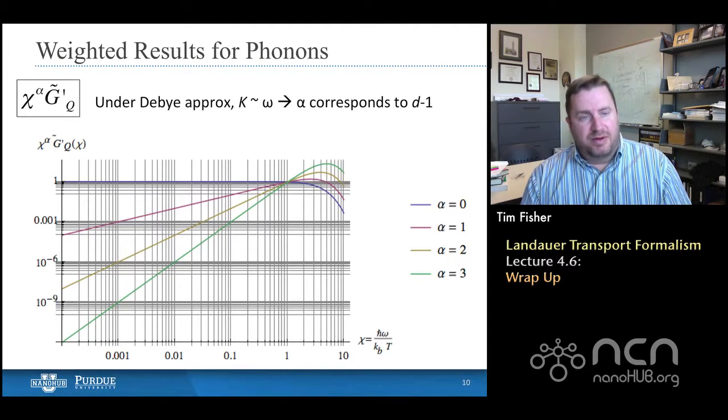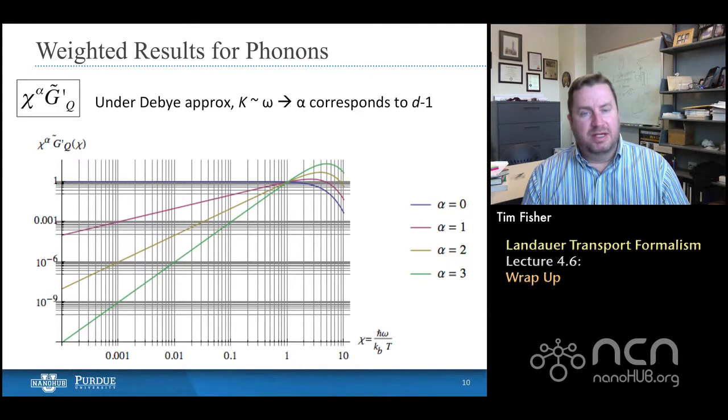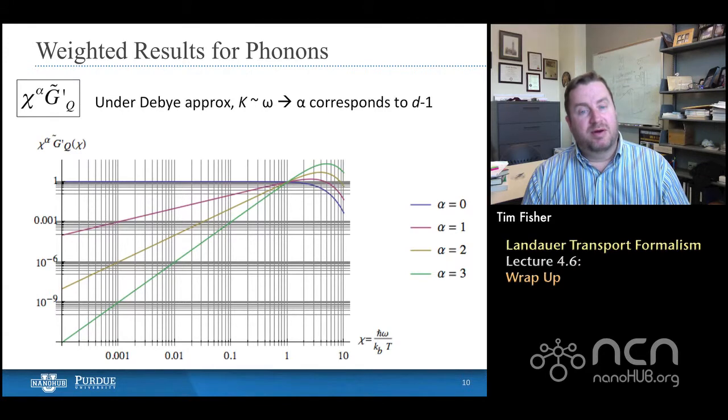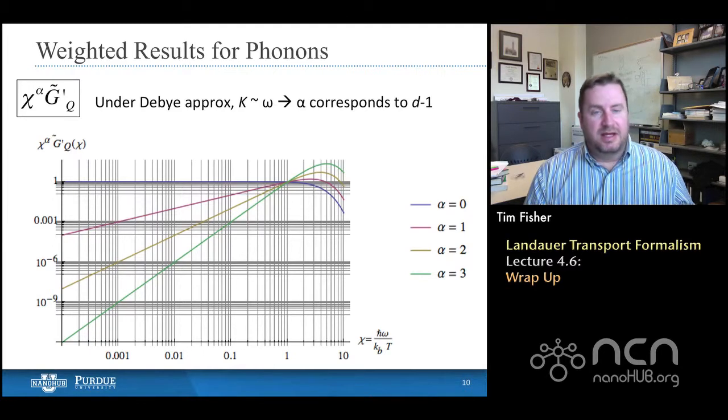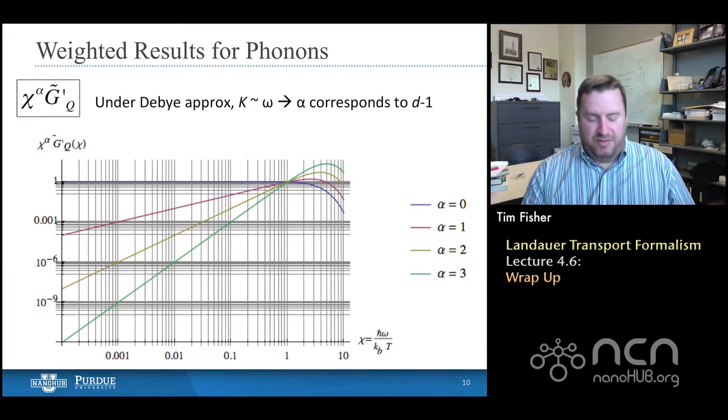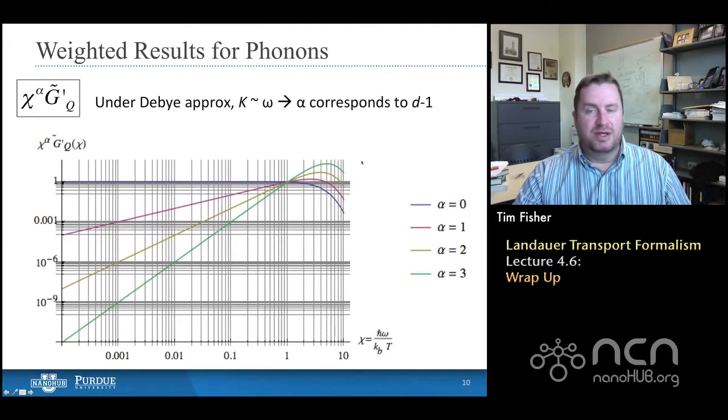We took, we went a step further and said that for higher dimensions, we find that the number of modes is proportional to K to the power D minus one, where D is the dimensionality. So in one dimension, K goes to the power zero, so that's just one. But for two dimensions, it's K to the power one. And, in three dimensions, it's K to the power two. And if we then further take the Debye approximation, which means that the frequency is proportional to K, the wave vector, then we find that it might be useful to understand this product that's boxed in the top left here. That's chi. That's the normalized energy of the carrier raised to the power alpha, where alpha corresponds to the dimensionality minus one.